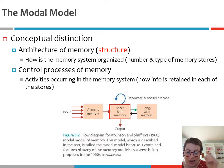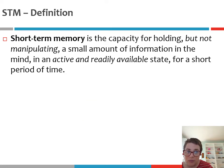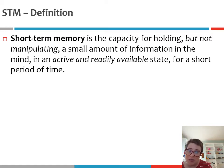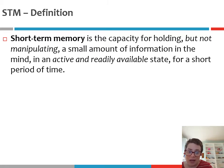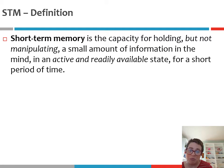In my last video we focused exclusively on short-term memory. As a refresher, short-term memory refers to a mechanism that allows for holding — but not manipulating — a small amount of information in the mind in an active and readily available state for a short period of time. In the context of the modal model, we start out with sensory memory, which is basically a brief snapshot of all the information coming in through our various sensory modalities, and then whatever we focus our attention on is transmitted from sensory to short-term memory for additional processing.